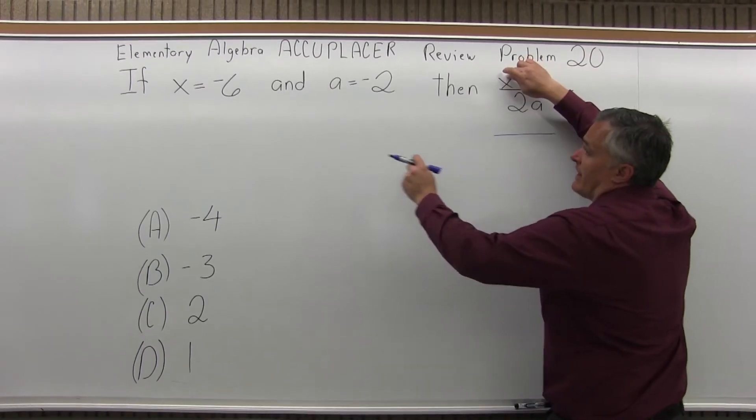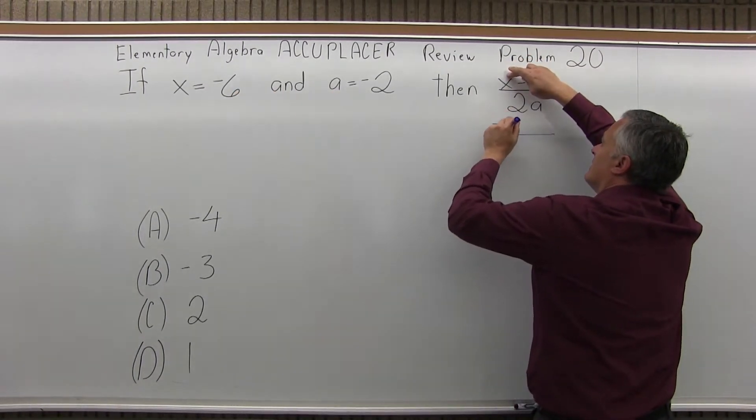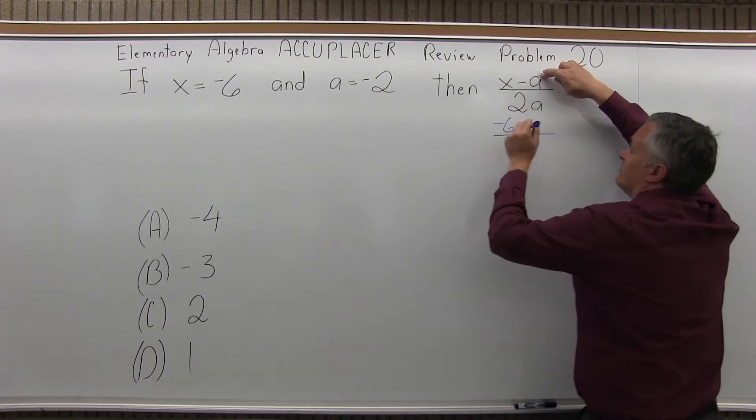Let's put in the values of these variables. x is negative 6 minus, so that minus there, a is negative 2.